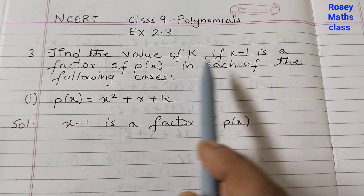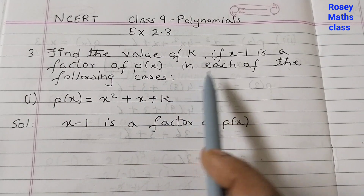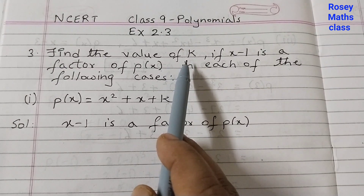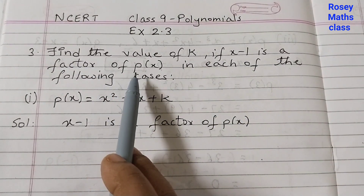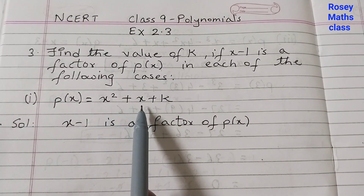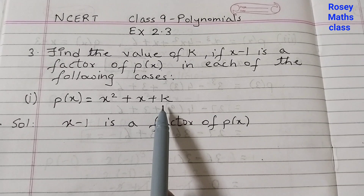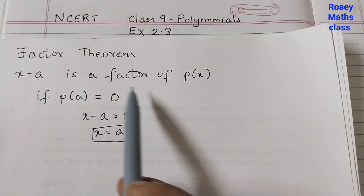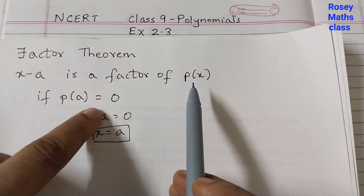Find the value of k if x minus 1 is a factor of p(x) in each of the following cases. So we need to find the value of k. k is a constant and it is given that x minus 1 is a factor of p(x). We need to use the factor theorem here. Factor theorem states that x minus a is a factor of p(x) if p of a is equal to 0.